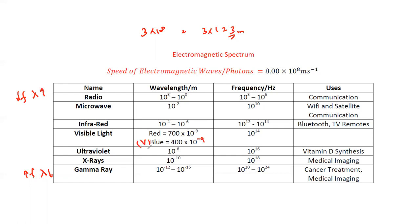Ultraviolet is around 10^-8 to 10^-10 metres; X-rays are around 10^-10 to 10^-12 metres; and gamma rays range from 10^-12 to 10^-16 metres. The corresponding frequency ranges are roughly 10^3 to 10^6 Hz for radio, up to 10^20 to 10^24 Hz for gamma.